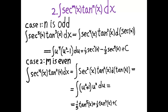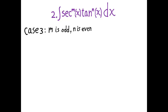Of course, sometimes n is odd and m is even simultaneously, so — similarly to the cases with powers of sine and cosine — you may have a choice of which strategy to use. You'll get two different answers that look like they're not the same function, but they'll actually differ by a constant. So that takes care of cases 1 and 2.